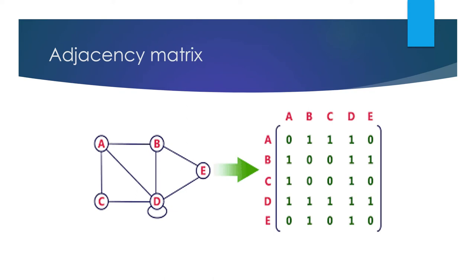Next vertex is c. For c to a, there is one edge, so it is taken as 1. For c to b and c to c, there are no edges, so it is taken as 0, 0. For c to d, there is one edge, so it is taken as 1. For c to e, there is no edge, so it is taken as 0.